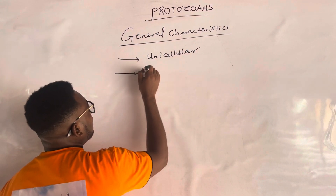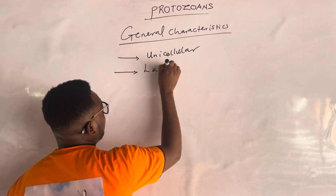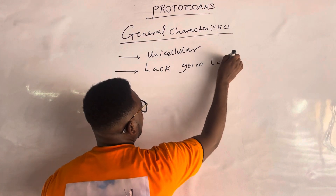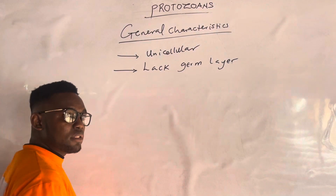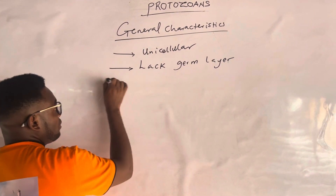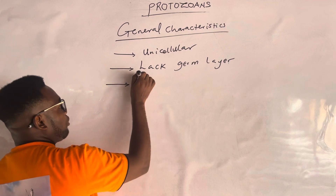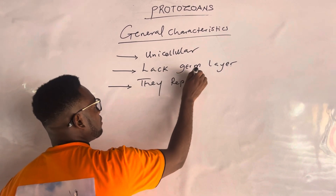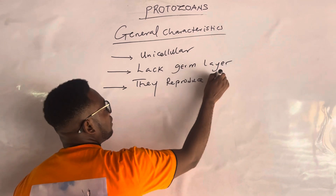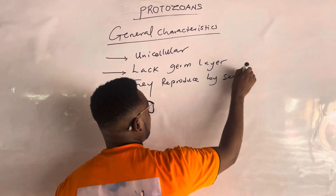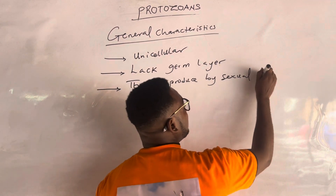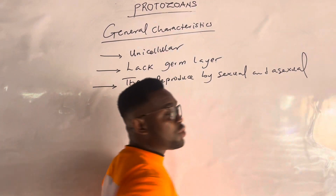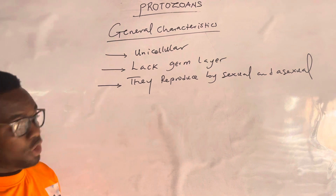Two, they lack a germ layer. They also reproduce by both sexual and asexual methods of reproduction.